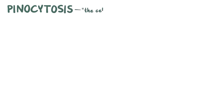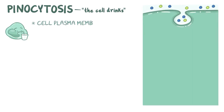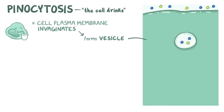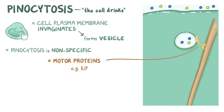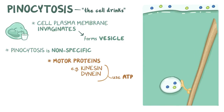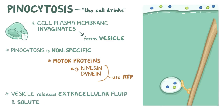Pinocytosis, on the other hand, literally means the cell drinks. In pinocytosis, the cell's plasma membrane invaginates to form a small cup around portions of extracellular fluid and solutes. Then the edges of the cup come together, forming a vesicle. Since the cell is not really eating anything other than the occasional solute, the result is not a phagosome, but merely a vesicle. The pinocytosis vesicle is much smaller than a phagosome. Also, unlike phagocytosis, pinocytosis is a nonspecific way for cells to take in solutes — whatever solutes are hanging around in the extracellular fluid get pulled inside the cup as well. Once inside the cell, motor proteins like kinesin or dynein carry the pinocytosis vesicle using ATP deeper into the cytosol, while the vesicle slowly releases the extracellular fluid and solutes into the cytosol.